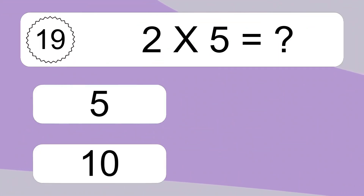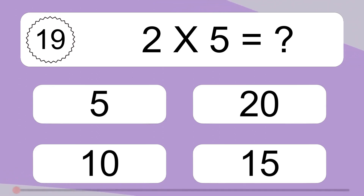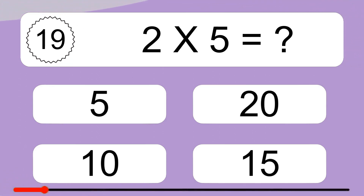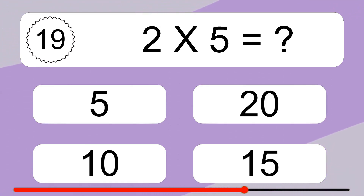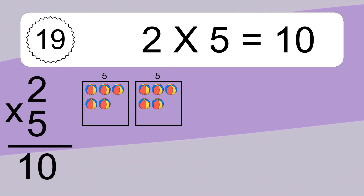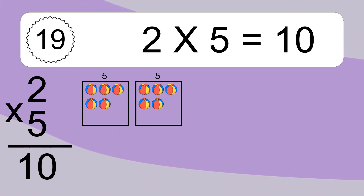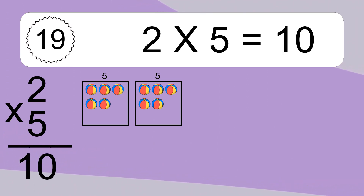2 x 5 equals what? 2 x 5 equals 10. We have 2 boxes and each box has 5 colorful balls inside. If you count all the balls in all the boxes together, you will have 2 x 5 balls. This equals 10 balls.